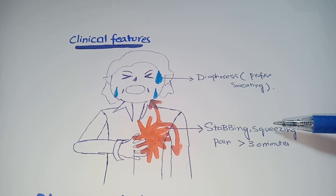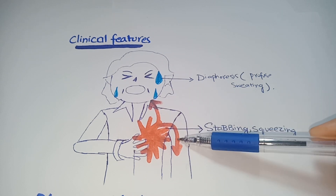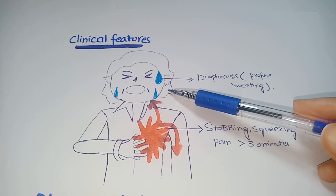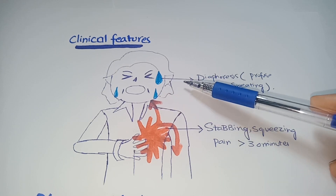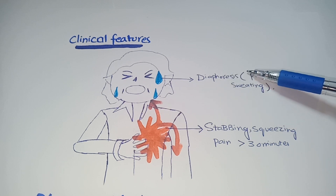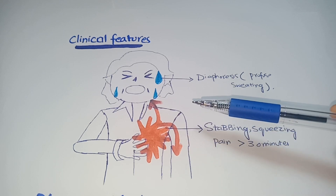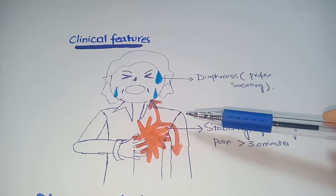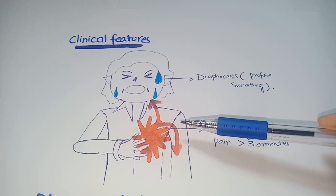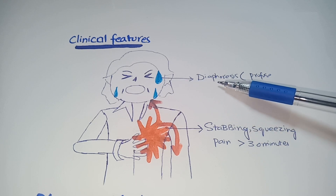Clinically, patients present with stabbing and squeezing pain lasting more than 30 minutes, usually referring to the left arm and lower jaw. Patients also experience vagal stimulation, resulting in diaphoresis — excessive sweating. The patient experiences stress due to extensive stabbing pain, which results in release of catecholamines from the adrenal gland, and these catecholamines activate the vagal nerve, ultimately causing diaphoresis.